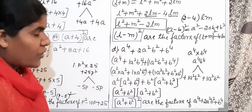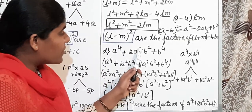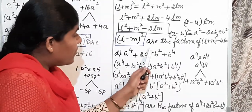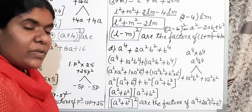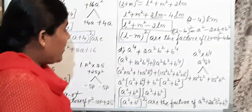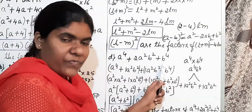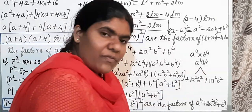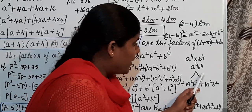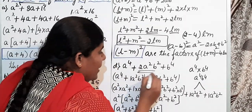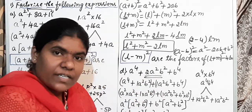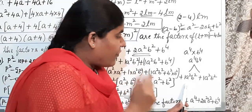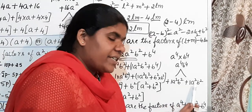Next, the last problem: a⁴ plus 2a²b² plus b⁴. Step 1: multiply first term into last term — a⁴ into b⁴ gives a⁴b⁴. The middle term is 2a²b². Selecting suitable multiplicative factors: 1·a²b² plus 1·a²b², because multiplying gives 1 times 1 is 1, a² into b² into a² into b² is a⁴b⁴.